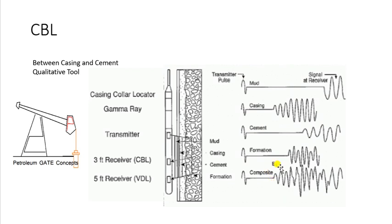If the amplitude is large or strong signal, this indicates that the pipe is free or indicates poor bond.